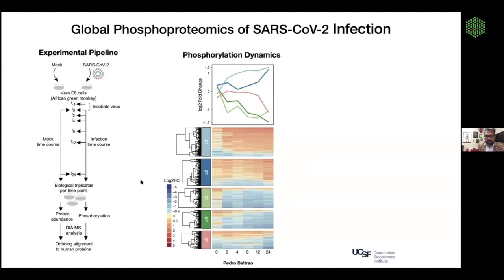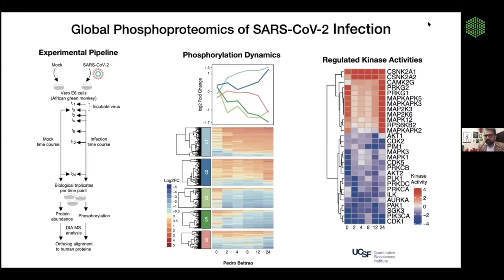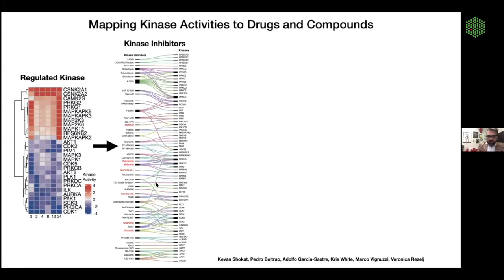Pedro and his team clustered this data into five different groups — sets of proteins being hyper-phosphorylated, hypo-phosphorylated, phosphorylation going up then down, down then up, and so on. There's a ton of great biology in here. One thing I really wanted to do was identify the kinases most misregulated based on the phosphorylation patterns. Pedro has done amazing work developing computational tools to do this very robustly, and we identified a set of kinases that were both up- and down-regulated in the context of infection.